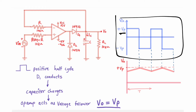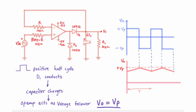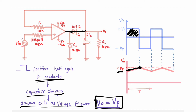Now let's see the working. I am giving a square wave at the input side which has Vp as peak voltage. When we are in the positive cycle, the positive terminal of D1 will be at high potential, so D1 will get forward biased and start conducting. This path is closed, so the capacitor will start charging up to Vp — the peak voltage of your input signal. The op-amp is acting as a voltage follower, so output of the op-amp is Vp, which comes across the capacitor and the load resistor.